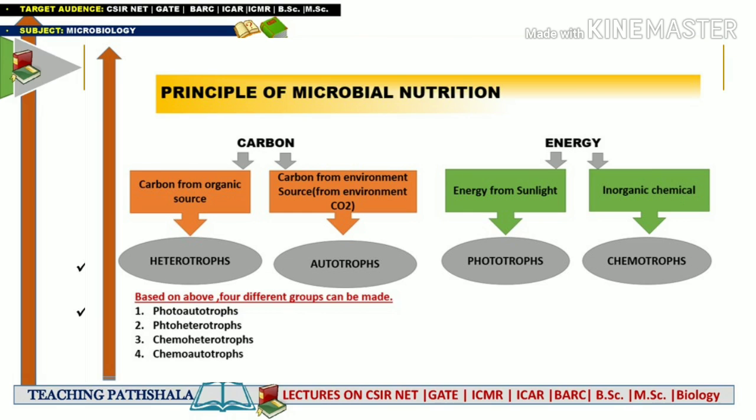The four categories are: first, photo-autotrophs; second, photo-heterotrophs; third, chemo-heterotrophs; and fourth, chemo-autotrophs.